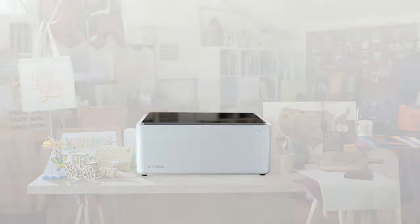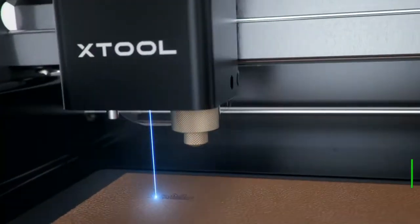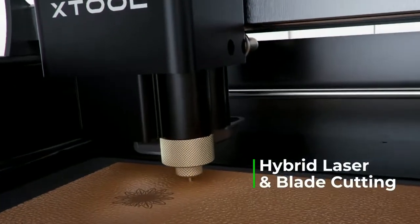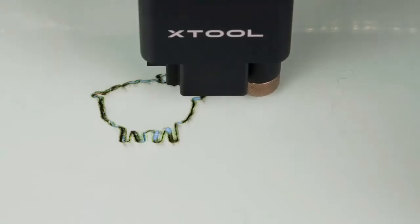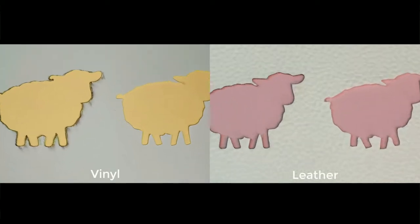M1 combines two different cutting technologies together: a laser head and a blade head. With blade cutting, M1 avoids the burnt look and discoloration of soft materials.